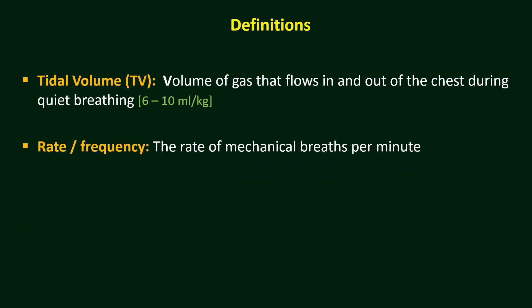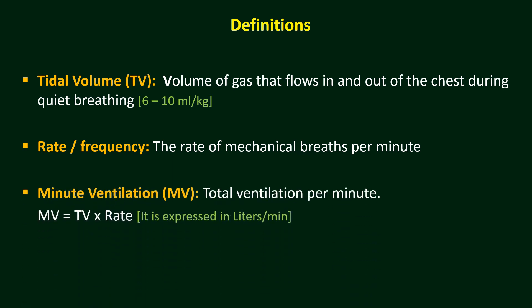Rate or Frequency is the rate of mechanical breaths per minute. In different brands of ventilator, you will find it by different names, either rate or frequency. Minute ventilation is the product of tidal volume and respiratory rate, expressed in L per minute. It is the total ventilation per minute. Usually we don't manipulate this directly; when we set tidal volume and rate, it gets calculated automatically.